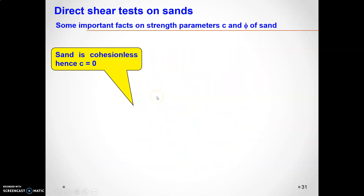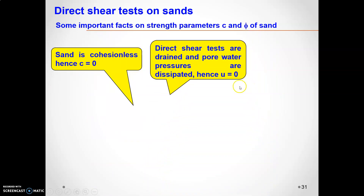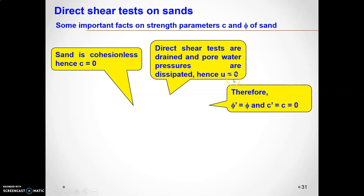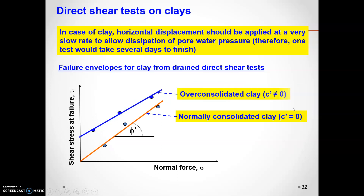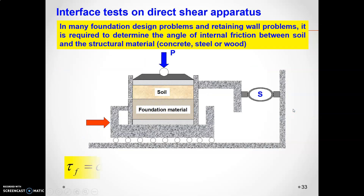Important facts to remember in shear strength: sand is cohesionless, hence c equals zero. In the direct shear test, drainage is permitted and pore water pressures are dissipated, hence u equals zero. Therefore, for sands based on direct shear test results, phi-dash equals phi and c-dash equals c equals zero.